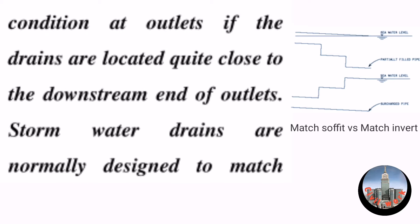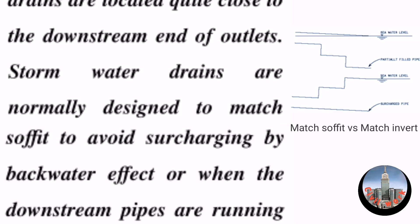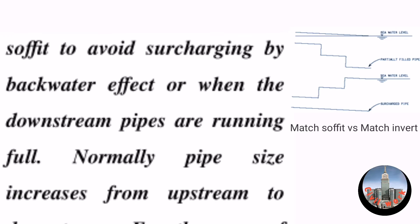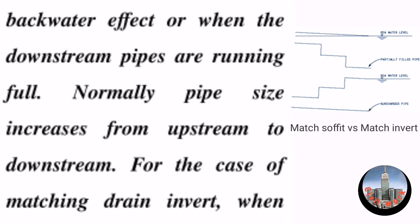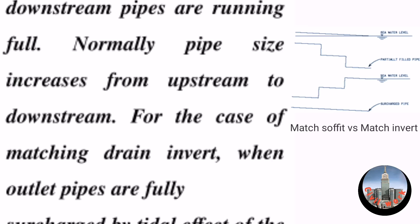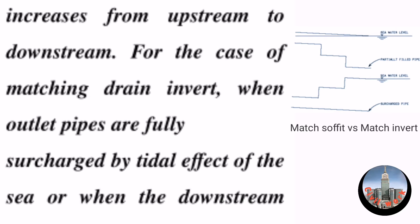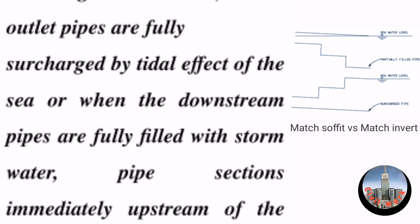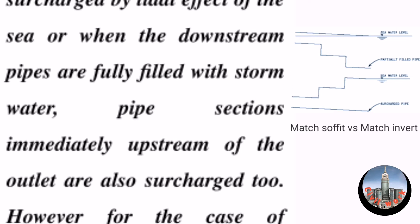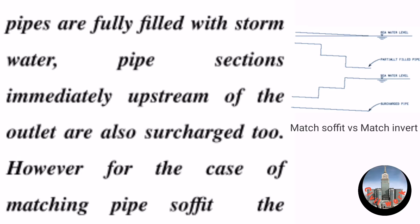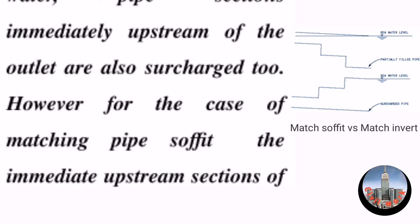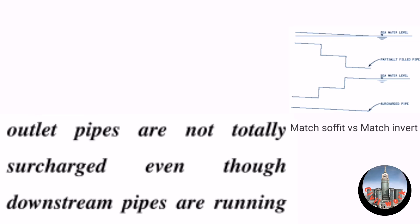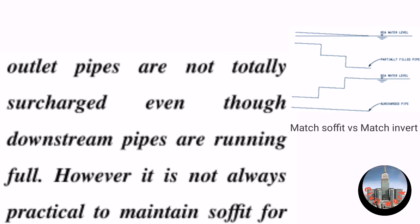Stormwater drains are normally designed to match soffit to avoid surcharging by backwater effect, or when the downstream pipes are running full. Normally pipe size increases from upstream to downstream. For the case of matching drain invert, when outlet pipes are fully surcharged by tidal effect of the sea or when the downstream pipes are fully filled with stormwater, pipe sections immediately upstream of the outlet are also surcharged. However, for the case of matching pipe soffit, the immediate upstream sections of outlet pipes are not totally surcharged even though downstream pipes are running full.